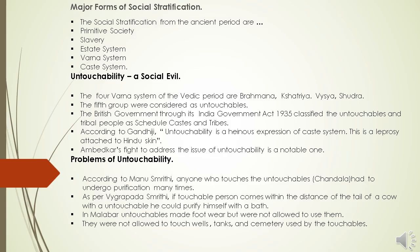One more example: in Malabar, a part of Kerala, untouchables made footwear — they used to make slippers — but were not allowed to use them. They were not even allowed to touch wells, tanks and cemeteries used by the touchables. Previously, untouchables were not allowed to enter temples or take water from wells. There were so many restrictions followed in those days.